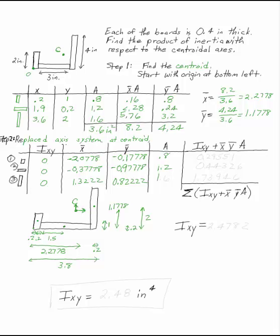My areas I had before. So the product of inertia of each of my pieces is Ixy plus x bar, y bar, a. So if I multiply those out and add them to 0, I get those, and I can add them all up. I get 2.4782. To answer the question, the product of inertia about the centroidal axis is 2.48 inches to the fourth.